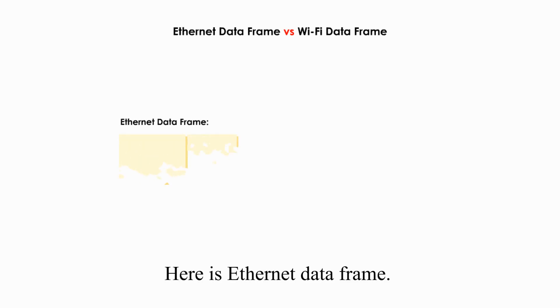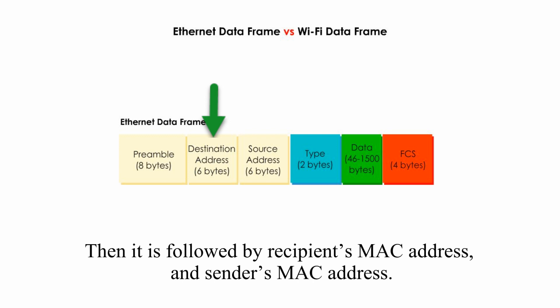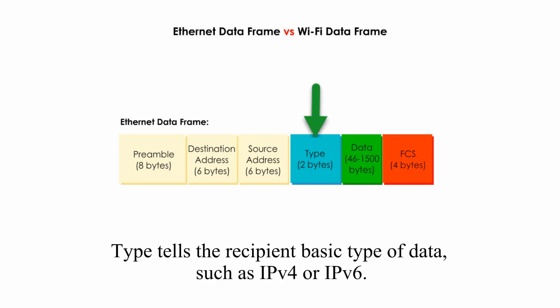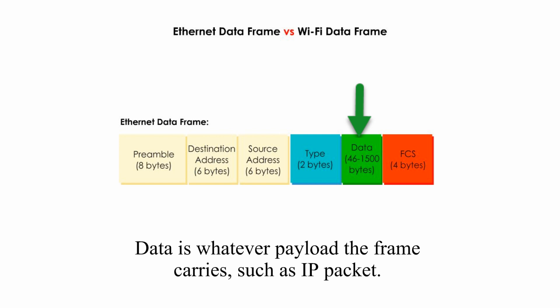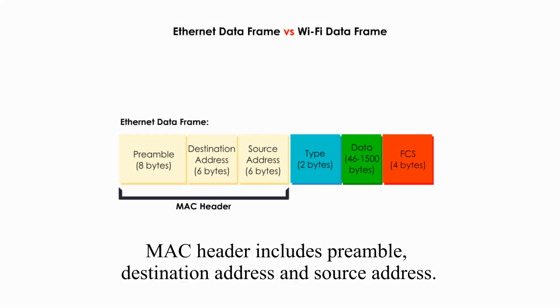Here is the Ethernet data frame. The first part is preamble, which tells the receiver that a frame is coming and where the frame starts. Then it is followed by the recipient MAC address and the sender's MAC address. Type tells the recipient the basic type of data, such as IPv4 or IPv6. Data is whatever payload the frame carries, such as an IP packet. The last part, FCS (Frame Check Sequence), is an error-checking mechanism to make sure the frame is intact. The MAC header includes preamble, destination address, and source address.